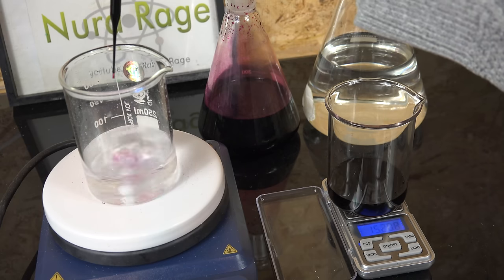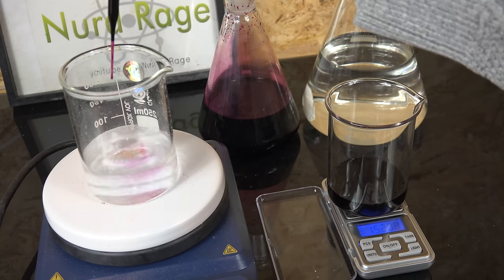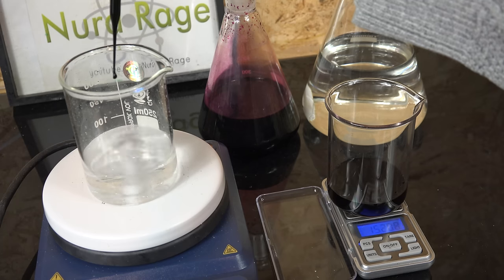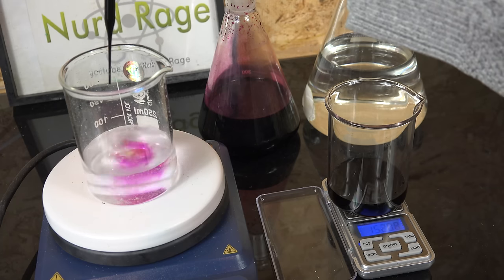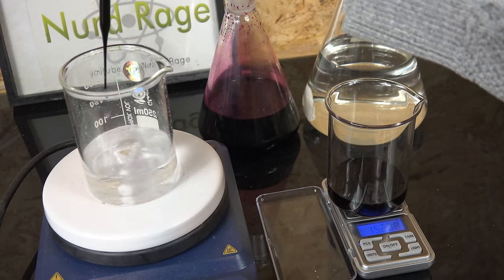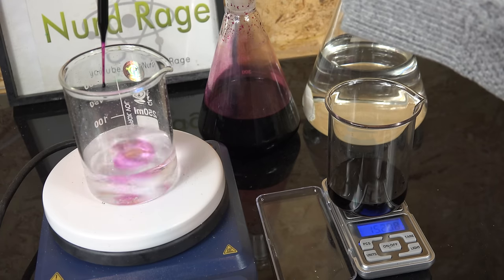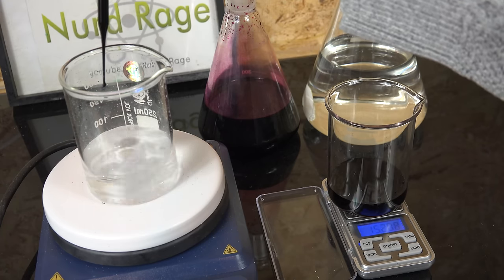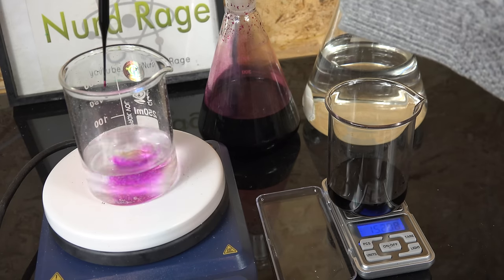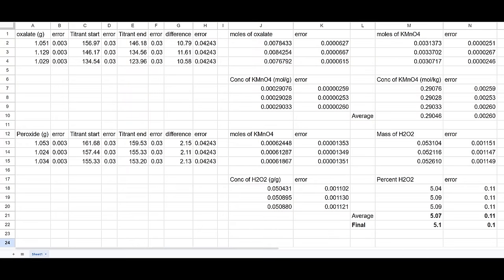But if you are doing analytical work you need to quantify just how much error you have so you can assess the usefulness and reliability of results. There are many cases where even larger errors are acceptable, just as long as you know just how large they are. If you noticed I expressed the final value of hydrogen peroxide as 5.1 percent plus or minus 0.1 percent. Where did I get the 0.1 percent from? I got that by mathematically carrying through and combining all the errors on the various input values used to calculate the resultant value.